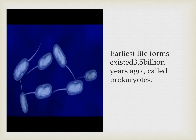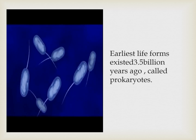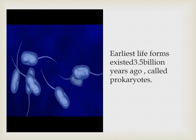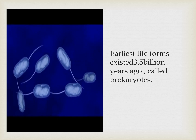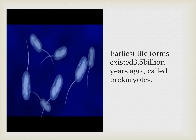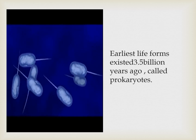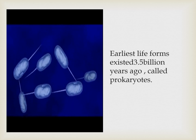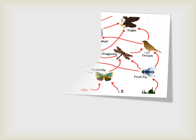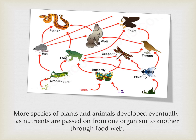Early life forms existed 3.5 billion years ago, called prokaryotes — like bacteria. These organisms photosynthesized under sunlight to sustain other forms of life that feed on them. More species of plants and animals developed as nutrients are passed from one organism to another through the food web. Any change in one species can affect the whole food web.